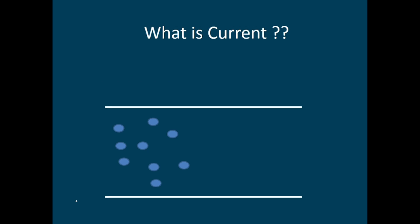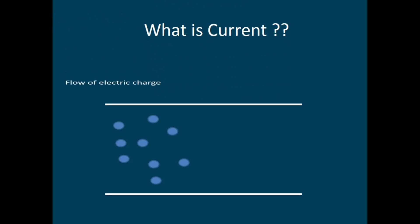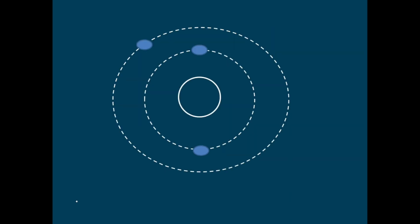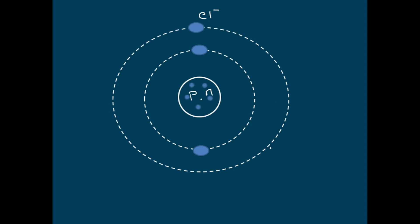Let's start with the current. What is current? In simple terms, it can be defined as a flow of electrical charge. To understand current, first let's see the concept of electrical charge. Any atom, which is the fundamental building block of any material, consists of three primary elements: protons and neutrons, which reside in the nucleus, and electrons, which move around the nucleus in orbits. Electrons in the outermost orbit can be easily knocked out of the atom by applying a little bit of energy.